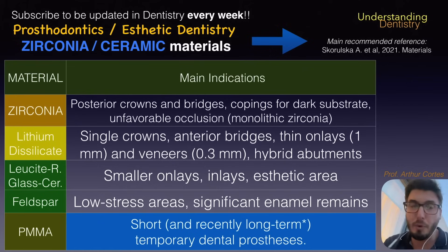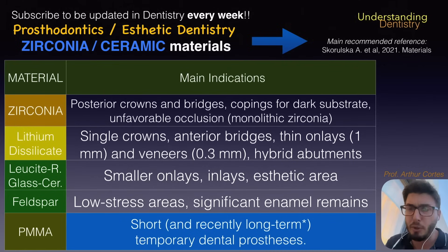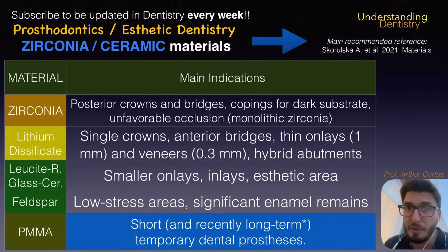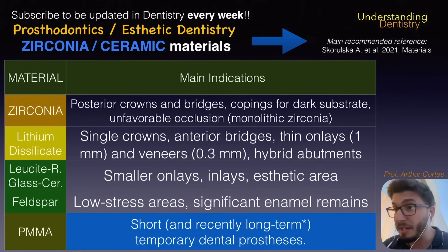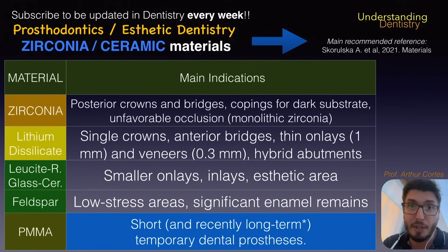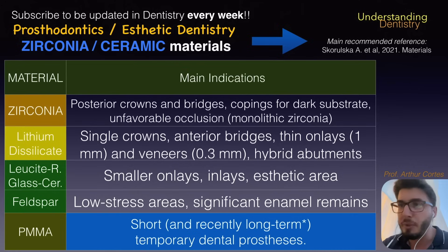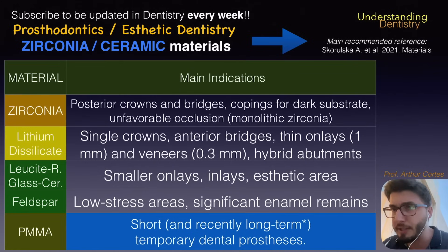For lithium disilicate, you could do single crowns, anterior bridges, thin onlays, veneers, and hybrid abutments. Lithium disilicate like Emax is more durable than leucite reinforced glass ceramics like Empress, although both are glass ceramics. For leucite reinforced glass ceramics, the main indications are smaller onlays, inlays, and crowns in the esthetic area — but be careful with occlusion, especially in cases with potential interferences and parafunctional loading.